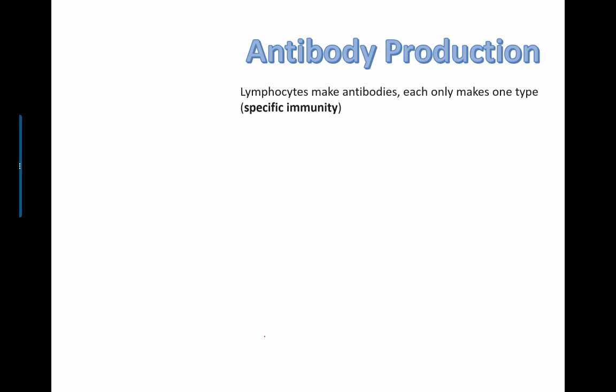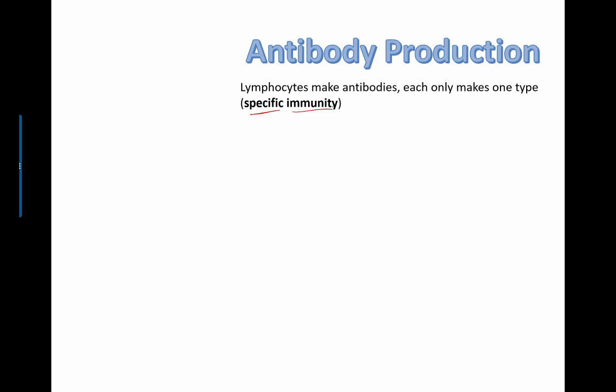The secondary line of defense gives rise to more specific immunity, and the white blood cells involved here are called lymphocytes. So far we've been introduced to two groups of white blood cells: phagocytes and lymphocytes. Lymphocytes make something called antibodies — and people get confused between the word antibodies and antibiotics, which are drugs that humans have manufactured. It gets even more confusing because antibiotics have been largely extracted from other living organisms, including bacteria themselves, in order to kill other types of bacteria. So don't get confused — we're only talking about antibodies now, which arise from the secondary line of defense.